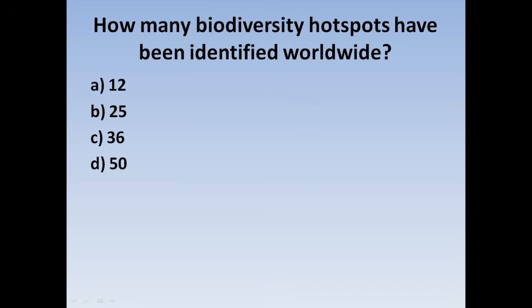Next question: How many biodiversity hotspots have been identified worldwide? Option A: 12, Option B: 25, Option C: 36, Option D: 50. Correct answer: Option C, 36 biodiversity hotspots have been identified worldwide.